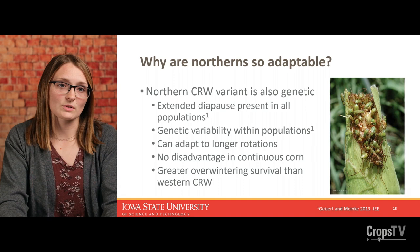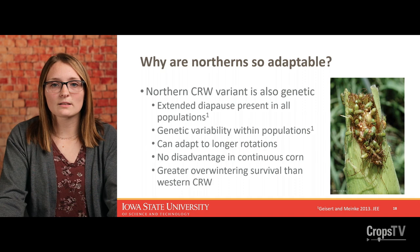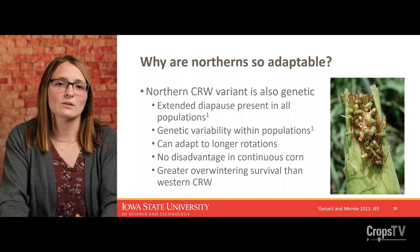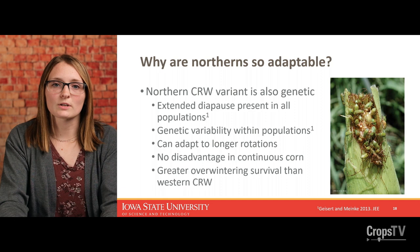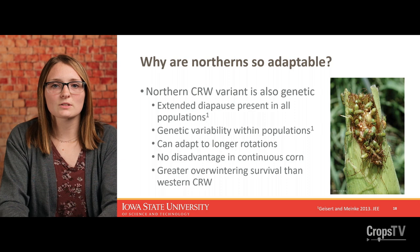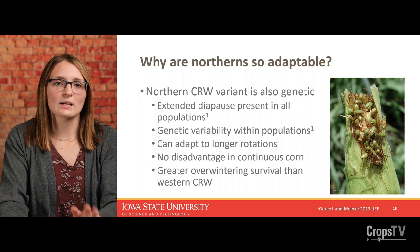Variants wouldn't have any disadvantage in continuous corn — if there are variants in the landscape that end up in a continuous cornfield, they'll always have corn roots to eat. One of the reasons we might be seeing so many issues with northern corn rootworms in recent years is that they simply overwinter better than western corn rootworm. I don't know that that is specific to the northern corn rootworm variant, but they certainly overwinter better in general.